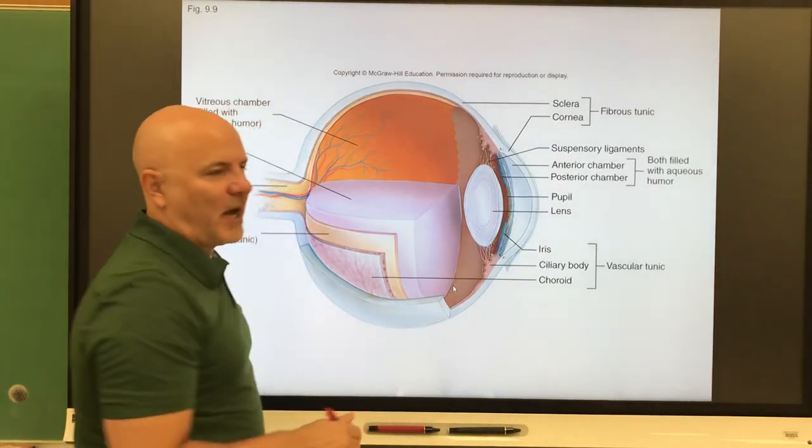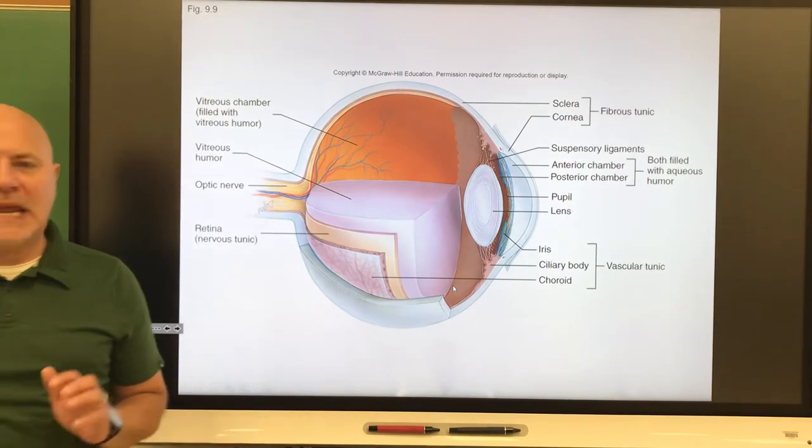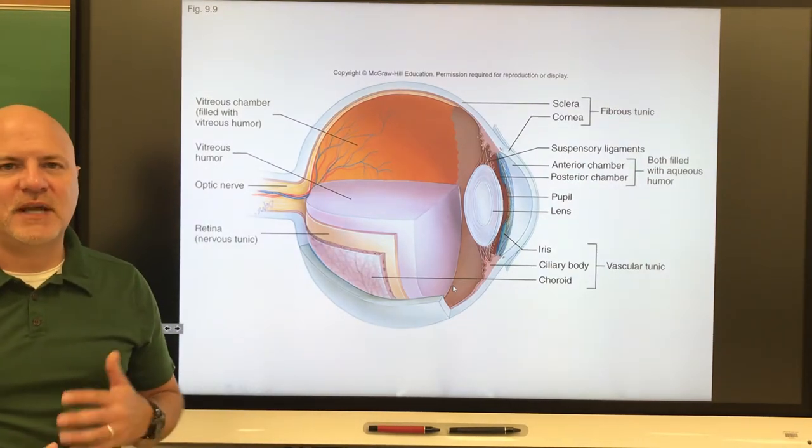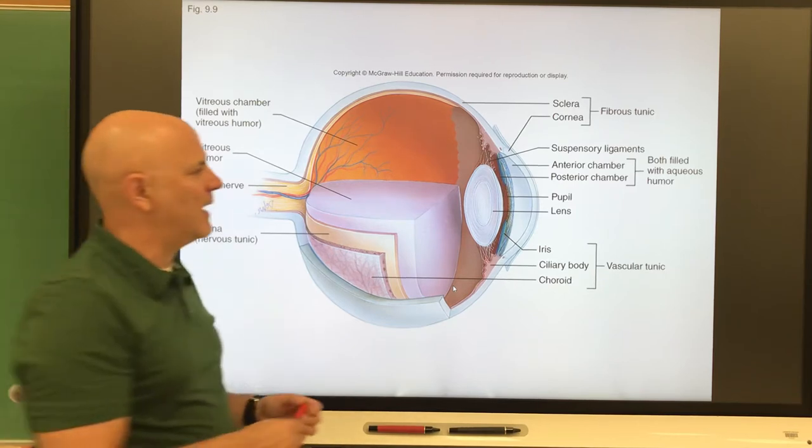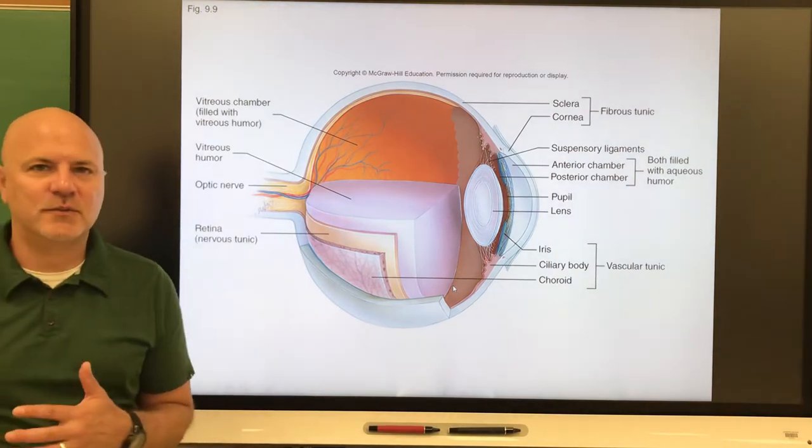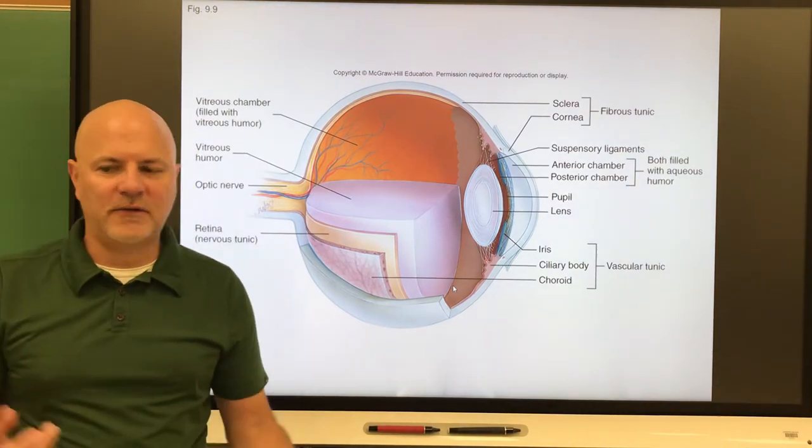If I go back to this picture here, the ciliary body also produces aqueous humor. This is a watery fluid that fills, nourishes, and maintains the shape of the front of the eye. It fills in all this area, that aqueous humor. Aqueous means watery, humor means fluid.